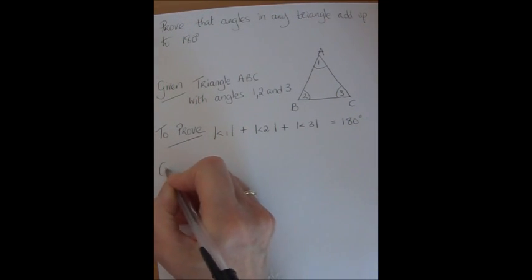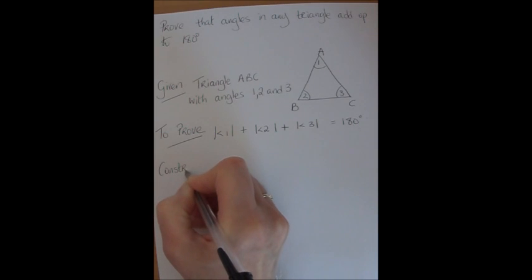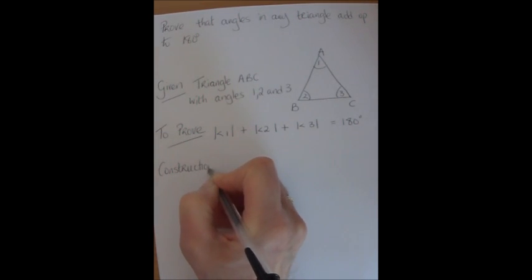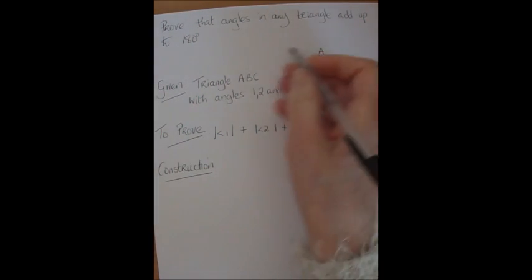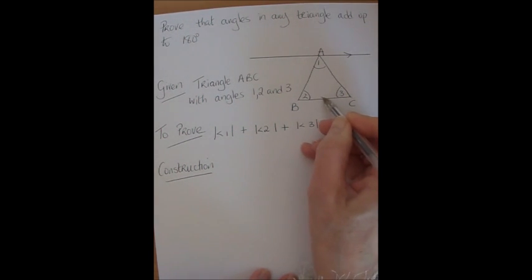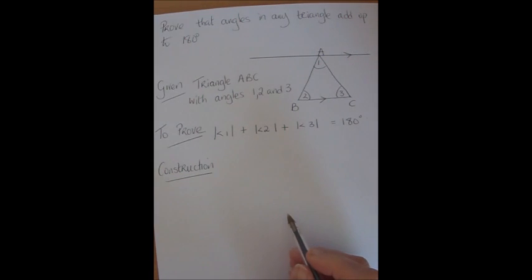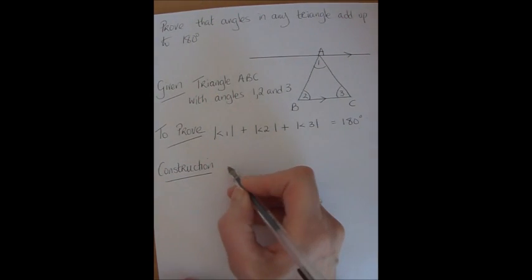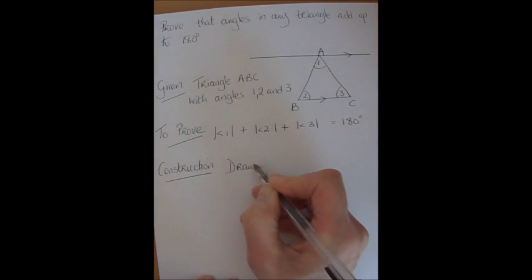Now for this theorem we need a construction. That is we have to add in something to our diagram in order to be able to prove it. So through A I've drawn a line parallel to BC and I'm putting in my arrows to show that they're parallel. And now I write down what I've just done.